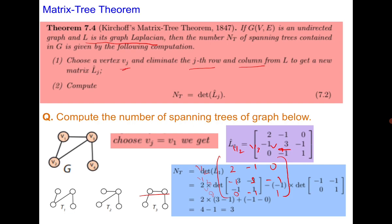Recall that we already computed that for the given graph there are 3 spanning trees — 3 non-isomorphic spanning trees. When we talk of non-isomorphic spanning trees, we are referring to the labeled ones. If unlabeled, the first and third are isomorphic, but as labeled graphs they have different vertex relations.